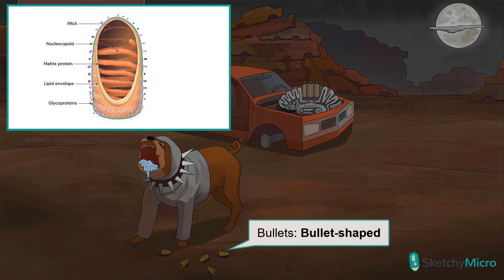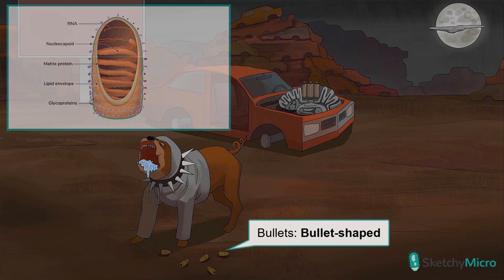Last cool fact about rabies virus: it actually appears bullet or rod-shaped under the microscope. So we've got some scattered bullets on the ground to remind you of the morphology. One more cool fact — rhabdo actually means rod in Greek. Amazing!